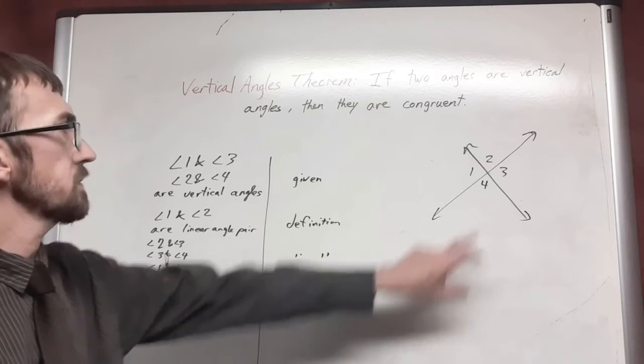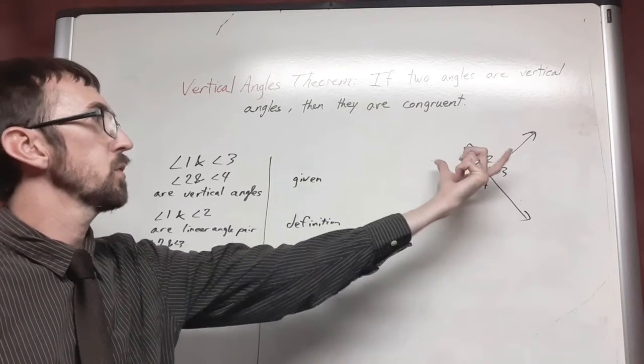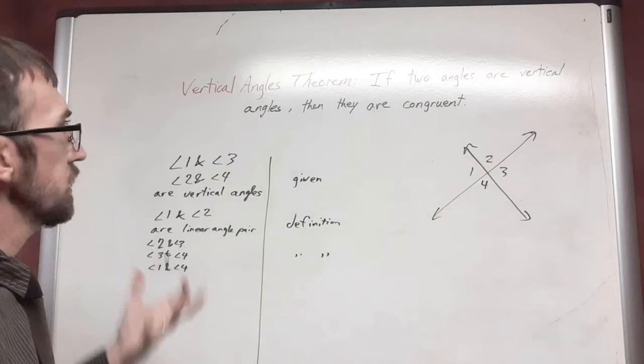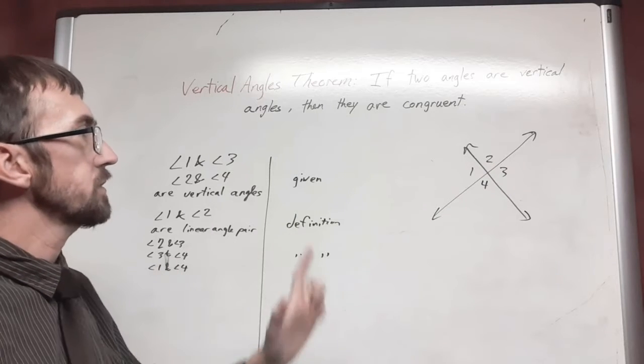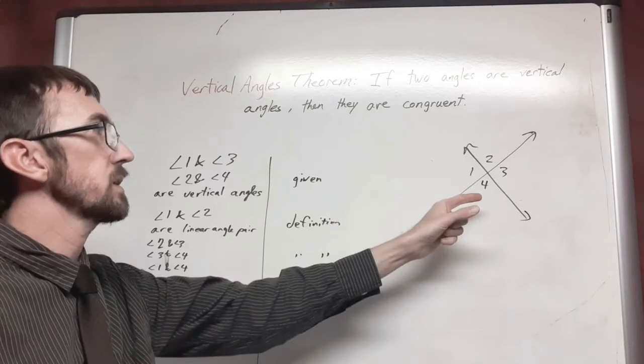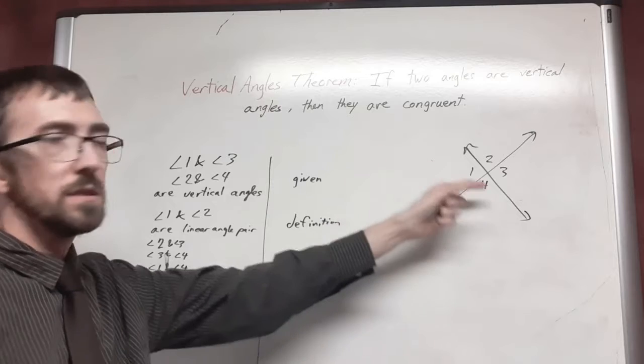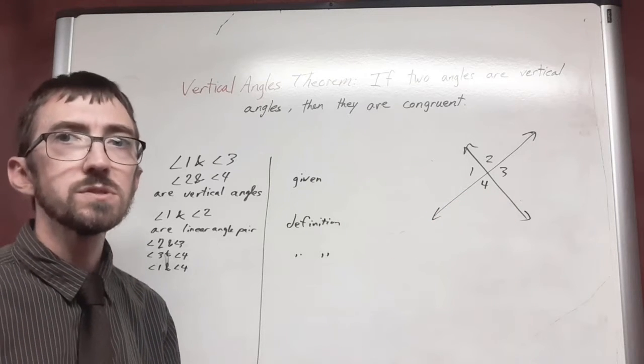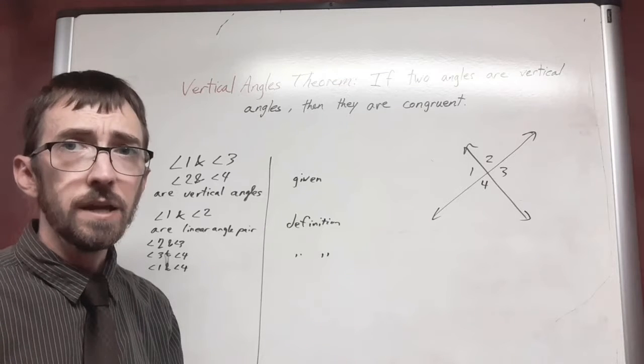So I want in the end to have some kind of statement about two and four or one and three. So what else can I do here? The other thing that I can do is that I can look at the fact that linear angle pairs are also supplementary angles. And we get that through the supplementary angles theorem.